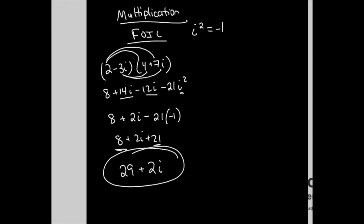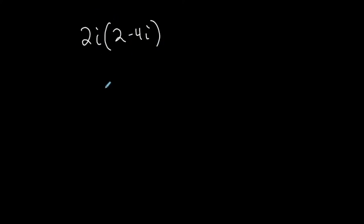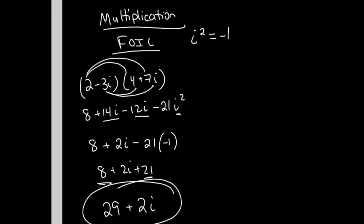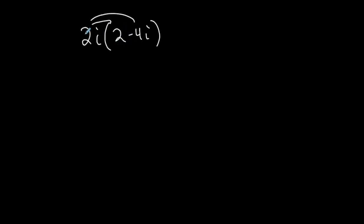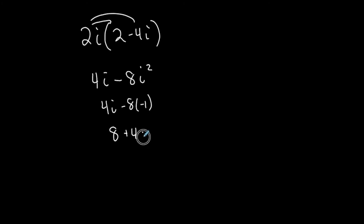Here's a situation where FOIL would not be required. If one complex number has zero as its real part — say 2i — and I'm multiplying it by another complex number in standard form like (2 - 4i), this is a single term, so all I do is distribute. 2i times 2 is 4i. 2i times negative 4i is negative 8i squared. Since i squared is negative 1, this becomes negative 8 times negative 1, or positive 8. So the product is 8 + 4i.